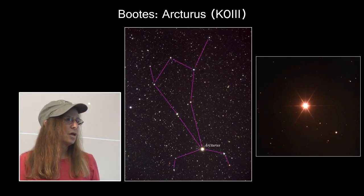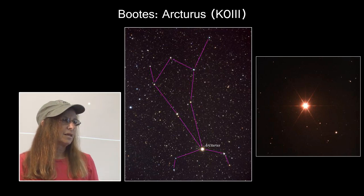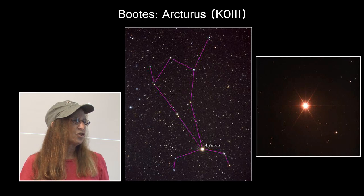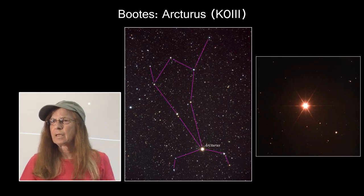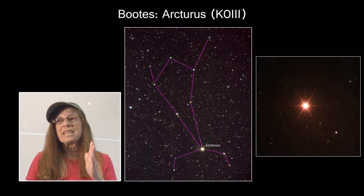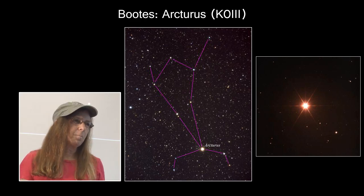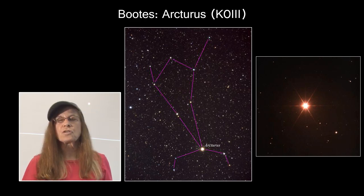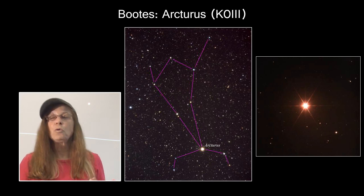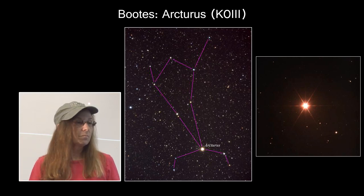The next constellation is Boötes, the shepherd, whose brightest star Arcturus is also a red giant. Arcturus is in a rather unusual situation — it is moving at about 150 kilometers per second perpendicular to the plane of the galaxy. It is part of what is known as the Arcturus stream, a group of stars all moving above the plane of the galaxy that will eventually escape.